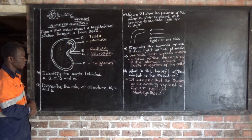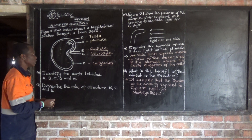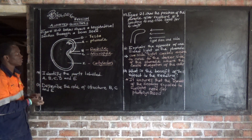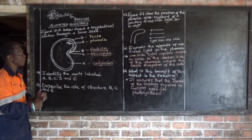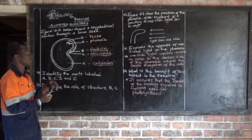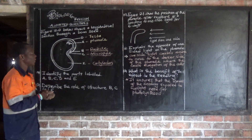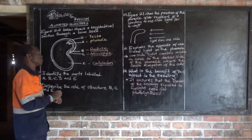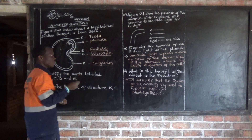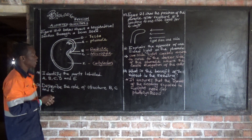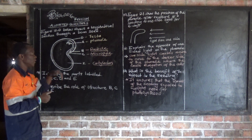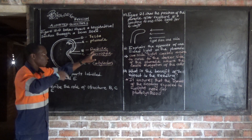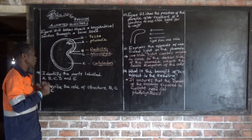Sometimes a question may ask: what is the other name of the radical? This one is called an embryonic root. Also, if asked to identify the parts which make up the embryo of a seed, the embryo is made up of the plumule and the radical. The function of the radical is that it develops into the root system after germination.